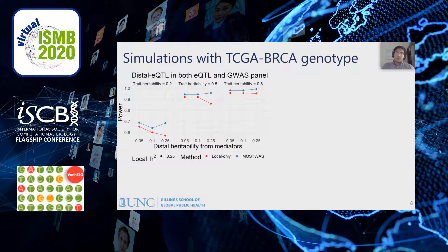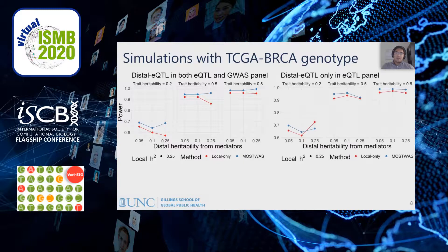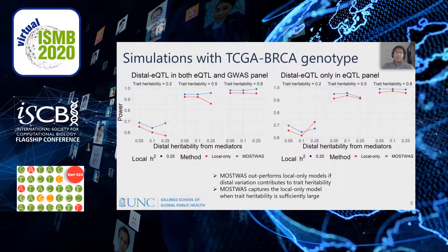We first conducted simulations where the distal expression heritability is equal in both the eQTL and GWAS panels. Here, we found that especially at large distal expression heritability settings, MOSTWAS has a significant advantage over local-only models in terms of TWAS power. Next, we considered a setting where the distal eQTLs leveraged in the eQTL panel do not exist in the GWAS panel — in other words, distal expression heritability is null in the GWAS panel. Here, once we achieve a large enough trait heritability, MOSTWAS appears to capture the local-only model and performs marginally better than local-only modeling. In sum, MOSTWAS outperforms local-only models if distal variation contributes to trait heritability, especially at low total trait heritabilities, and captures a local-only model when trait heritability is sufficiently large in GWAS panels where distal heritability does not affect expression.